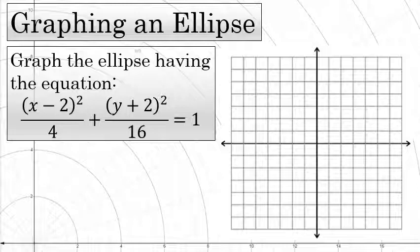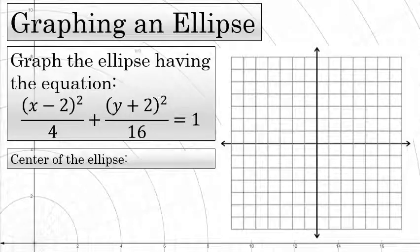The first property of the ellipse that we want to identify using this equation is the center of the ellipse. The center of the ellipse has an x and a y coordinate that are the values subtracted from x and y respectively in the equation.